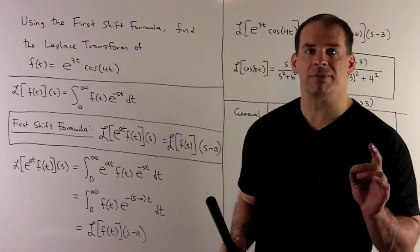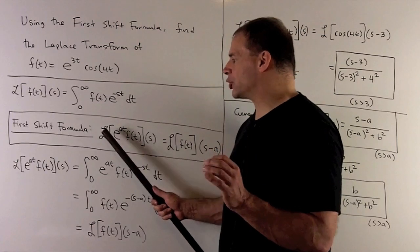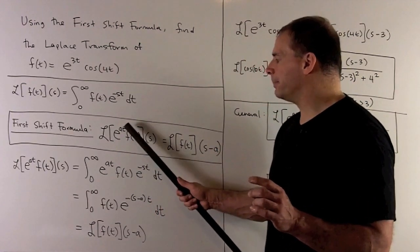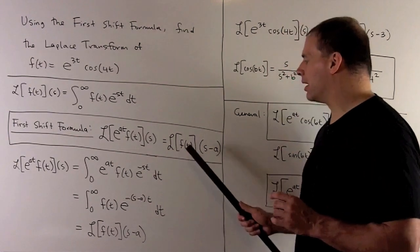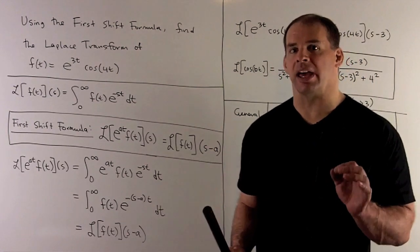The first shift formula says if we want to take the Laplace transform of a function f(t) times e^(at), the rule is to take your original Laplace transform of f(t), but instead of evaluating at s, you evaluate at s minus a.